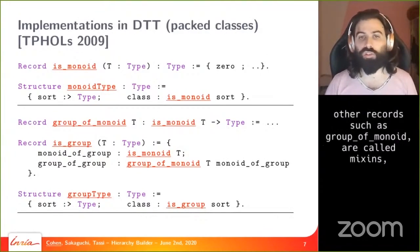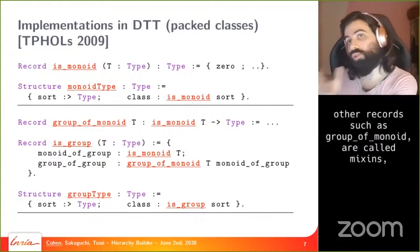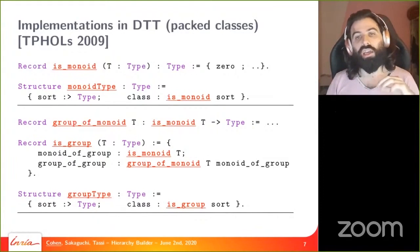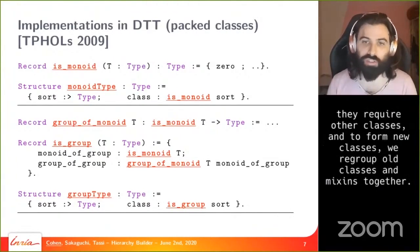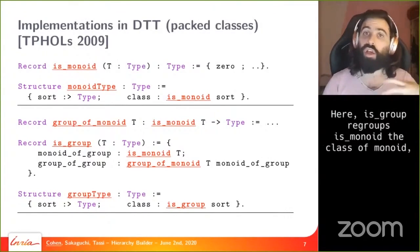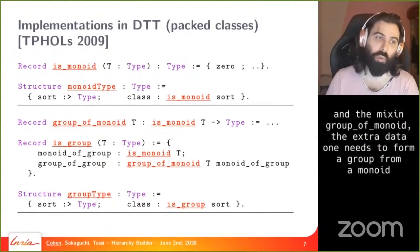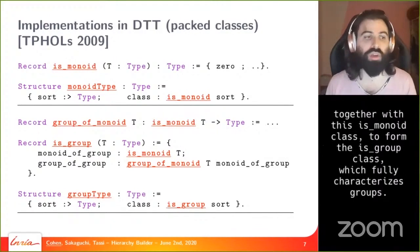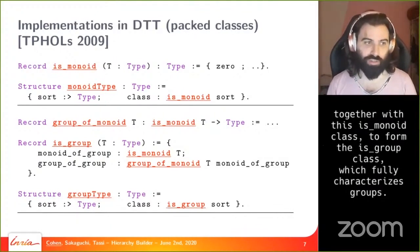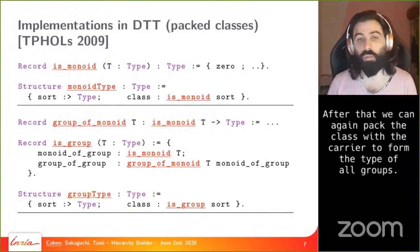In the packed classes setting, classes are always a predicate on type and fully characterize the structure. Other records like 'group of monoid' are called mixins and are not promoted to the rank of classes. Since they require other classes, we regroup classes and mixins together: the group regroups the class of monoids and the mixin 'group of monoid' - the extra structure needed to form a group from the monoid - together with the is-monoid class to form the is-group class.